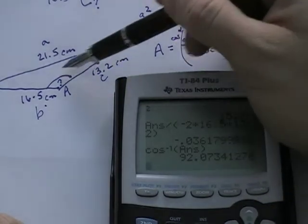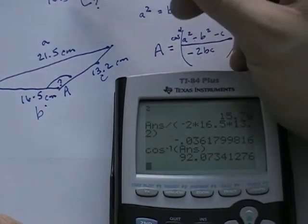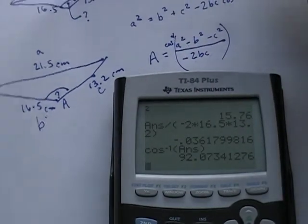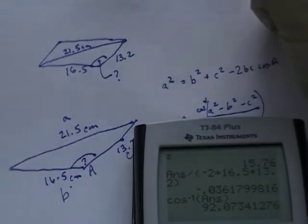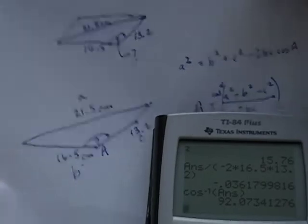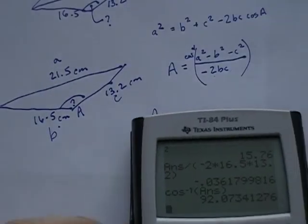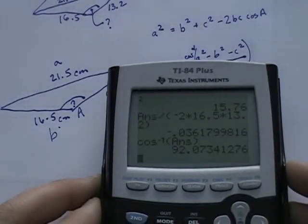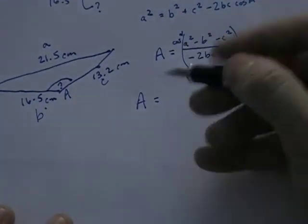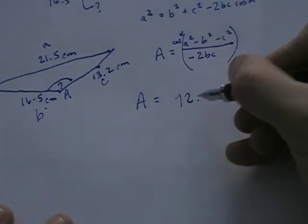And looking at this angle, I mean, it's a parallelogram. I'm expecting this to be bigger if you go back to the original picture as a parallelogram. I'm expecting the angle across from this long diagonal to be bigger than 90 degrees. And when all is said and done, I get an answer bigger than 90 degrees. So that makes good sense to me. So my answer is 92.07.